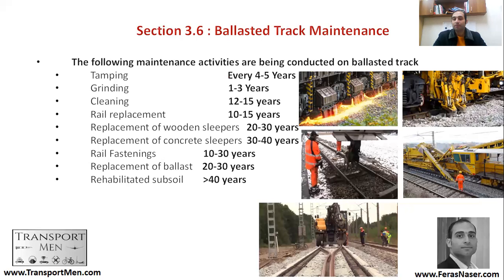For ballasted track maintenance: tamping occurs every 4 to 5 years; rail grinding to address wear occurs every 1 to 3 years; ballast cleaning every 12 to 15 years using a cleaning machine that removes old ballast and replaces it; rail replacement as needed; sleeper replacement for wooden or pre-stressed concrete sleepers; rail fastenings replacement every 10 to 30 years; full ballast replacement every 20 to 30 years; and full rehabilitation of the subsoil at more than 40 years.